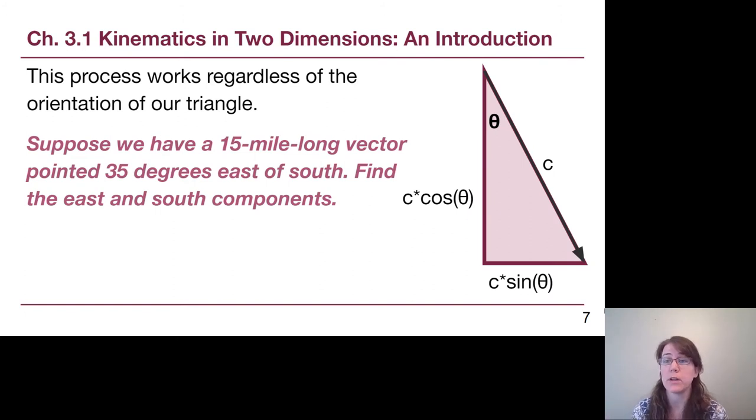So for example here, this particular situation, we have a 15 mile long vector pointed 35 degrees east of south means we face south and then swing east by 35 degrees. I want you to pause the video and try to get the east and south components on your own, identify which one is sine and which one is cosine before you start playing the video again.